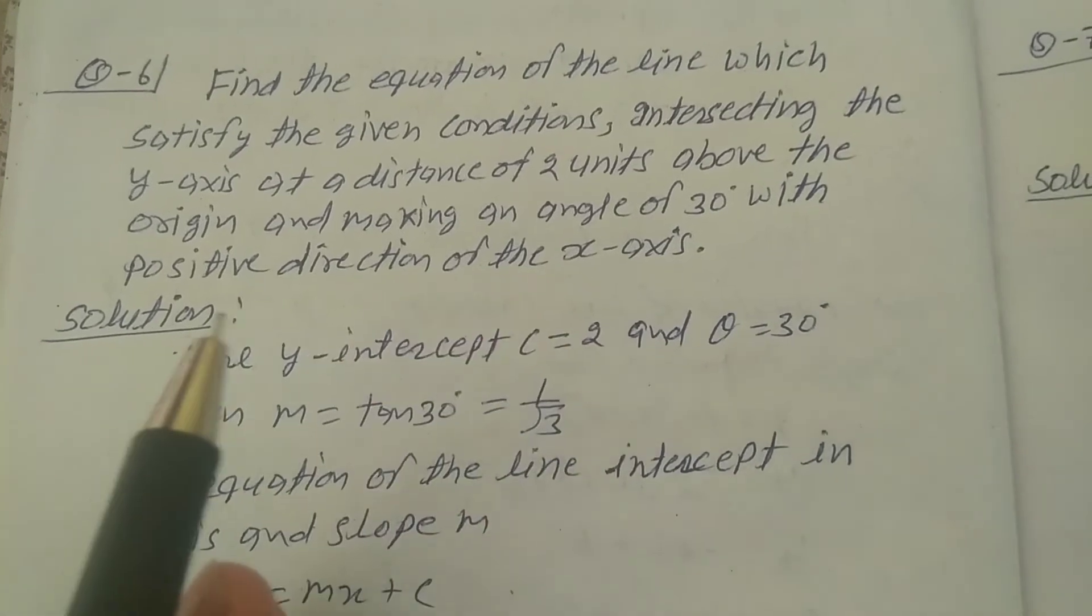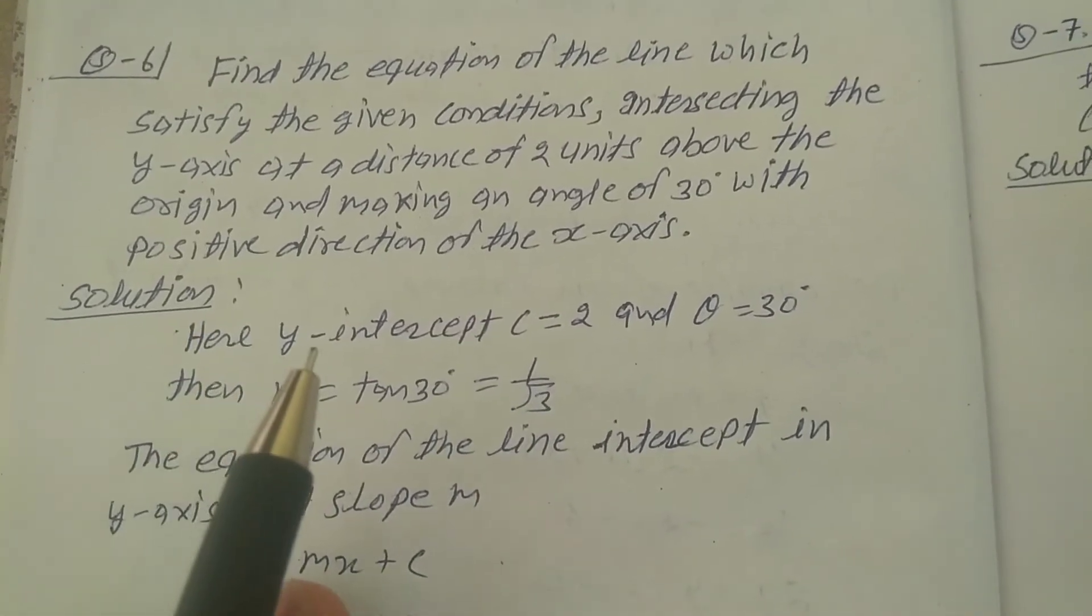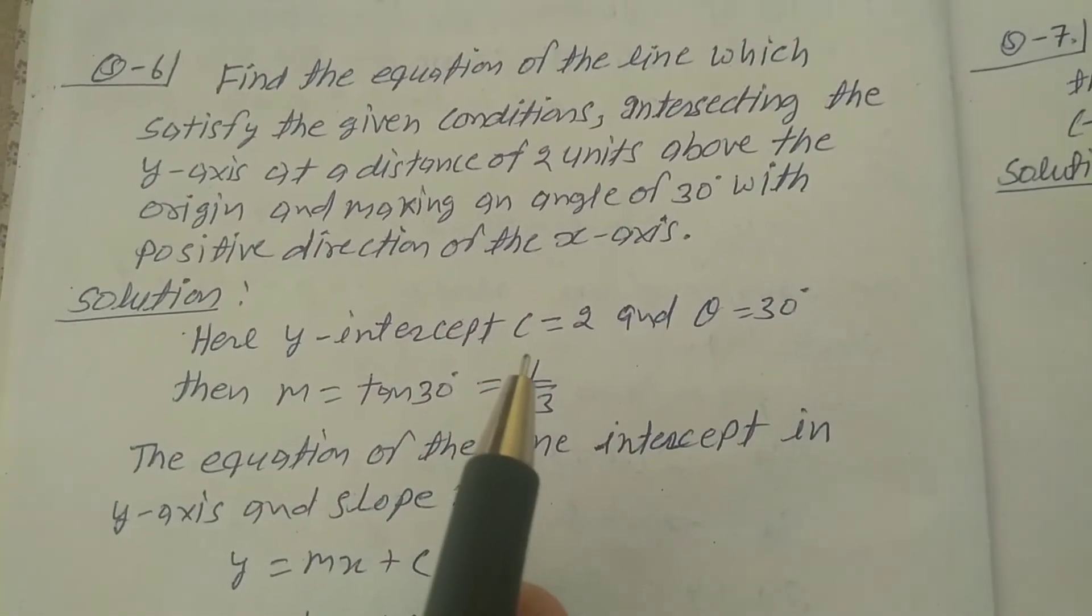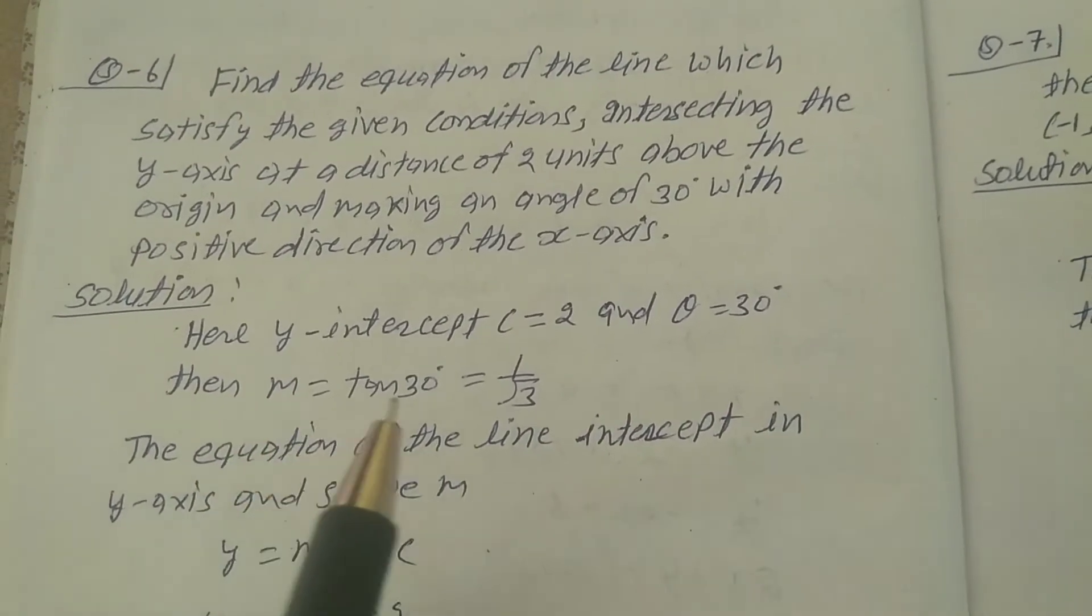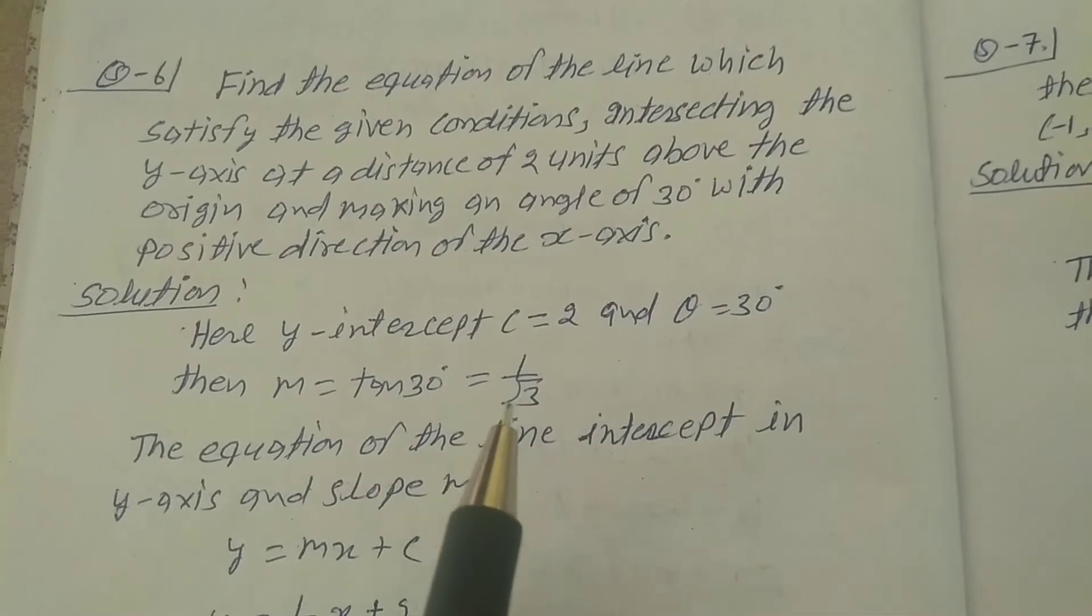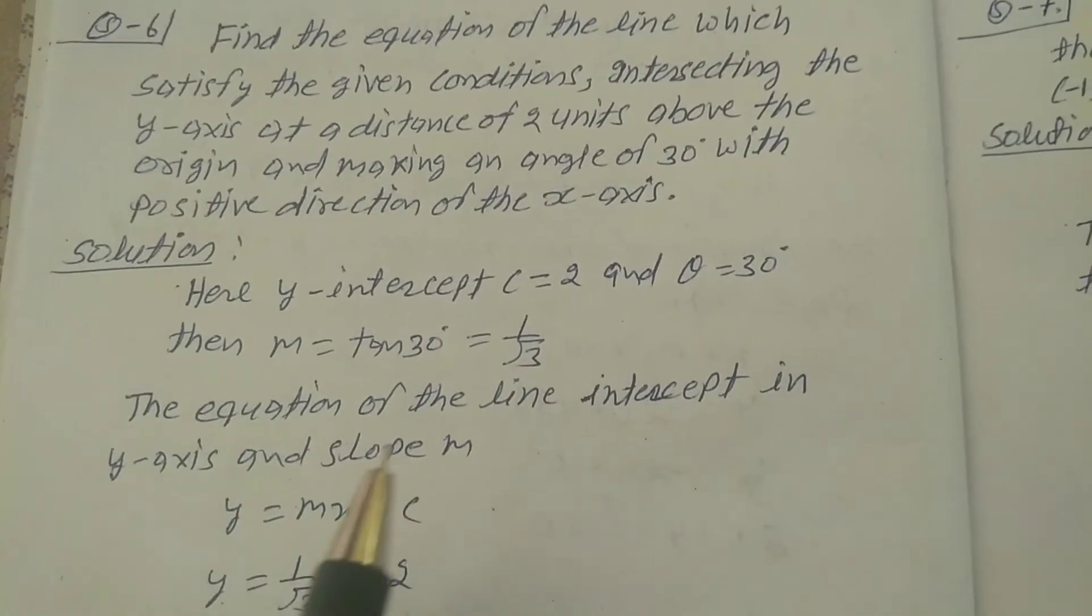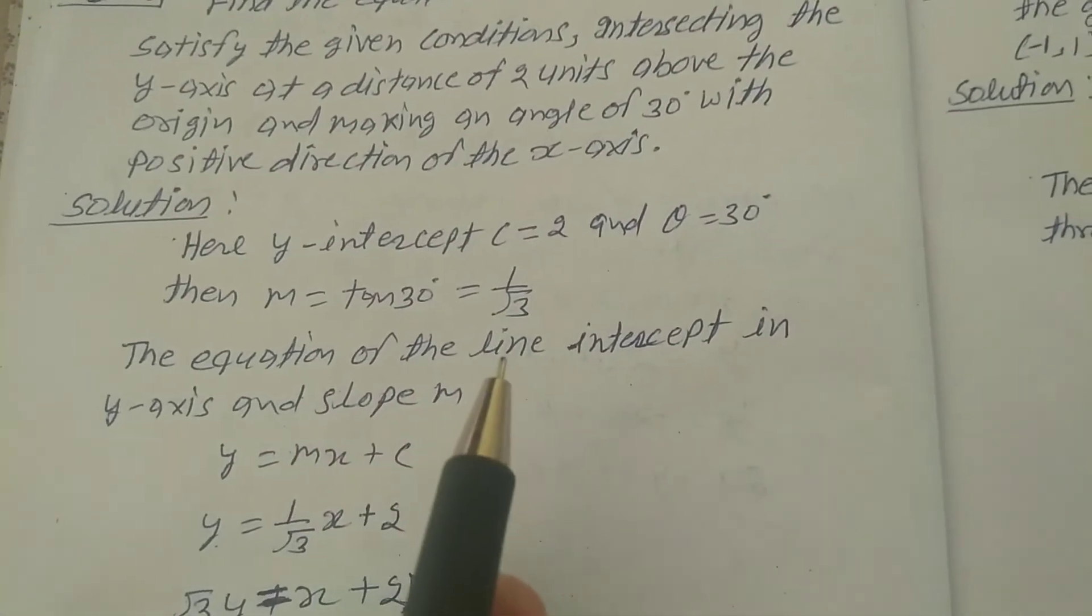Solution: Here, the y-intercept c equals 2 and theta equals 30 degrees. Then m equals tan 30 degrees, which equals 1 upon root 3.